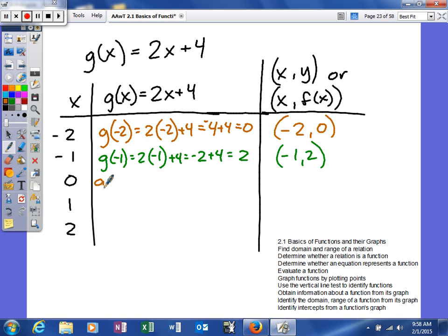So as you can see, what we're doing is plugging in the values for our x into our function and simplifying the math. When we get our answer, we're writing it as an ordered pair, where the x value comes first, and then our function value, or your y, comes second. That's basically what we're doing.